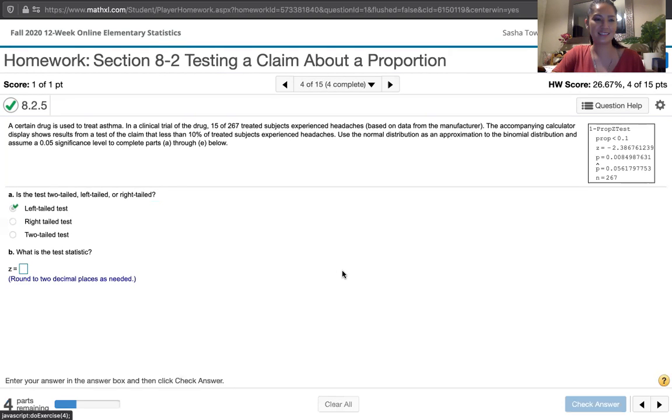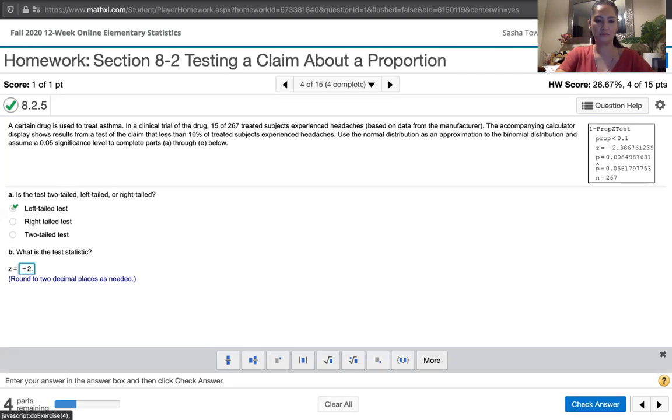And then the next part asks us for the test statistic. That's a z-score whenever we're talking about sample proportions. And if you go to the calculator output, you can see that the z-score is right here. Now they want us to round to two decimal places as needed. So we're just going to take this number, this negative 2.3867 and so on, and we're going to round to two decimal places. I've got negative 2.386. Because 6 is greater than 5, we're going to round up. So this is going to be approximately negative 2.39 when we round.